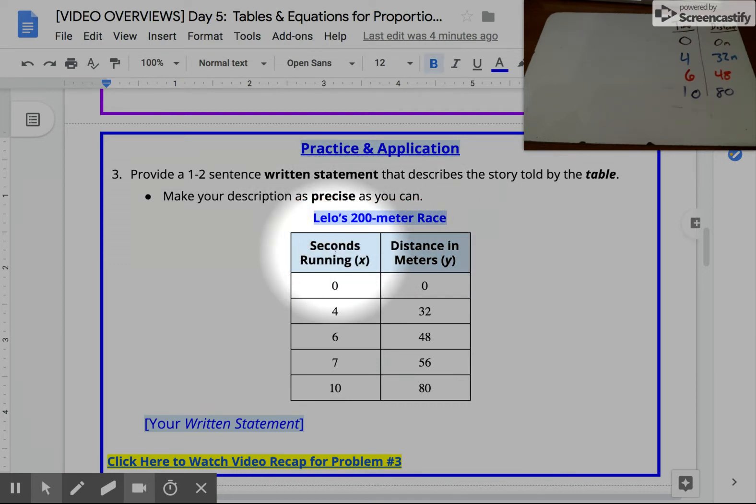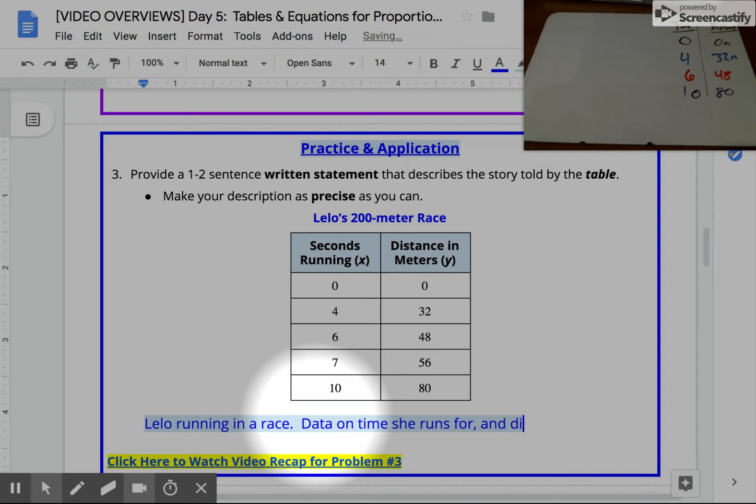The two variables or quantities that we're comparing are how many seconds she's been running for and the distance in meters she's covered. If I'm writing a written statement, the first thing I might do is just summarize: Lilo running in a race, data on time she runs for and distance she covers.